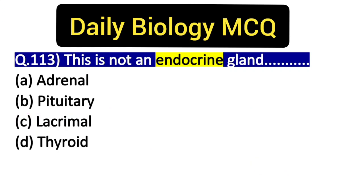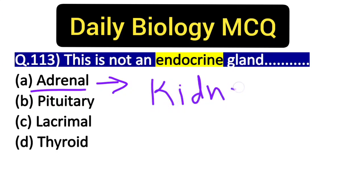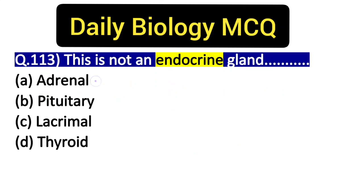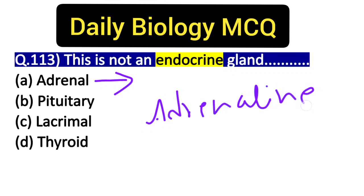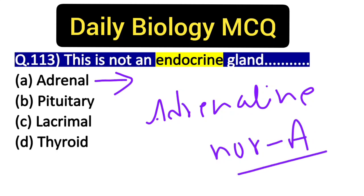Let's talk about adrenal glands. The adrenal gland is located on top of the kidney, and in the human body there are two adrenal glands. Two hormones are released from here: adrenaline and noradrenaline, also known by their second names epinephrine and norepinephrine.